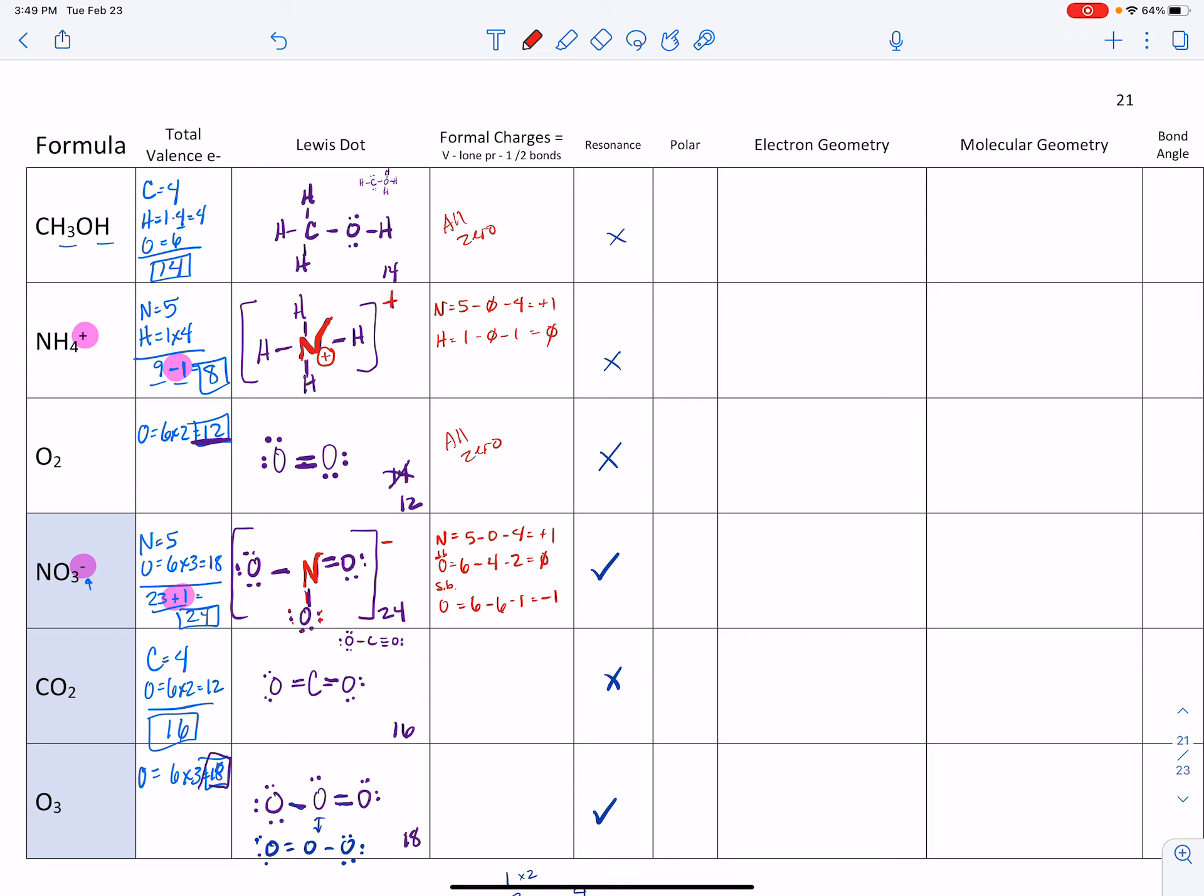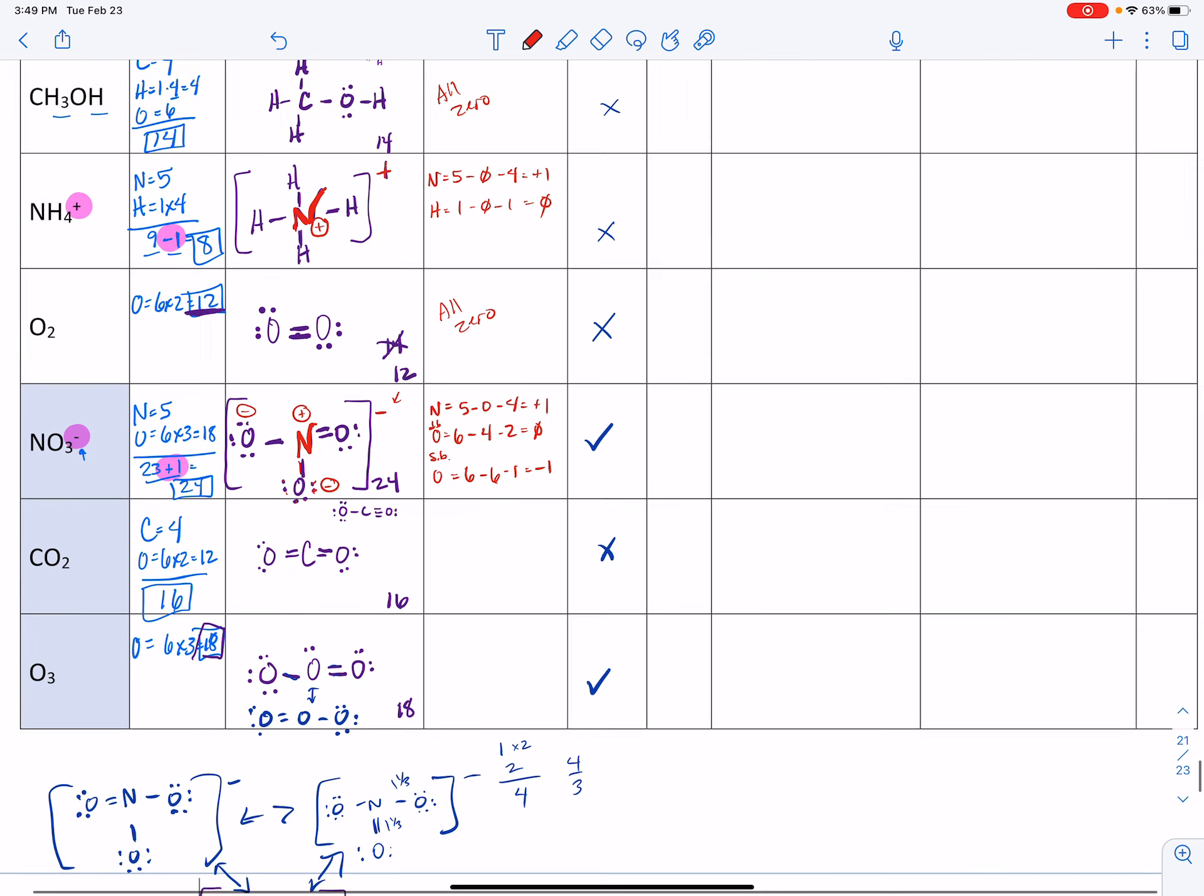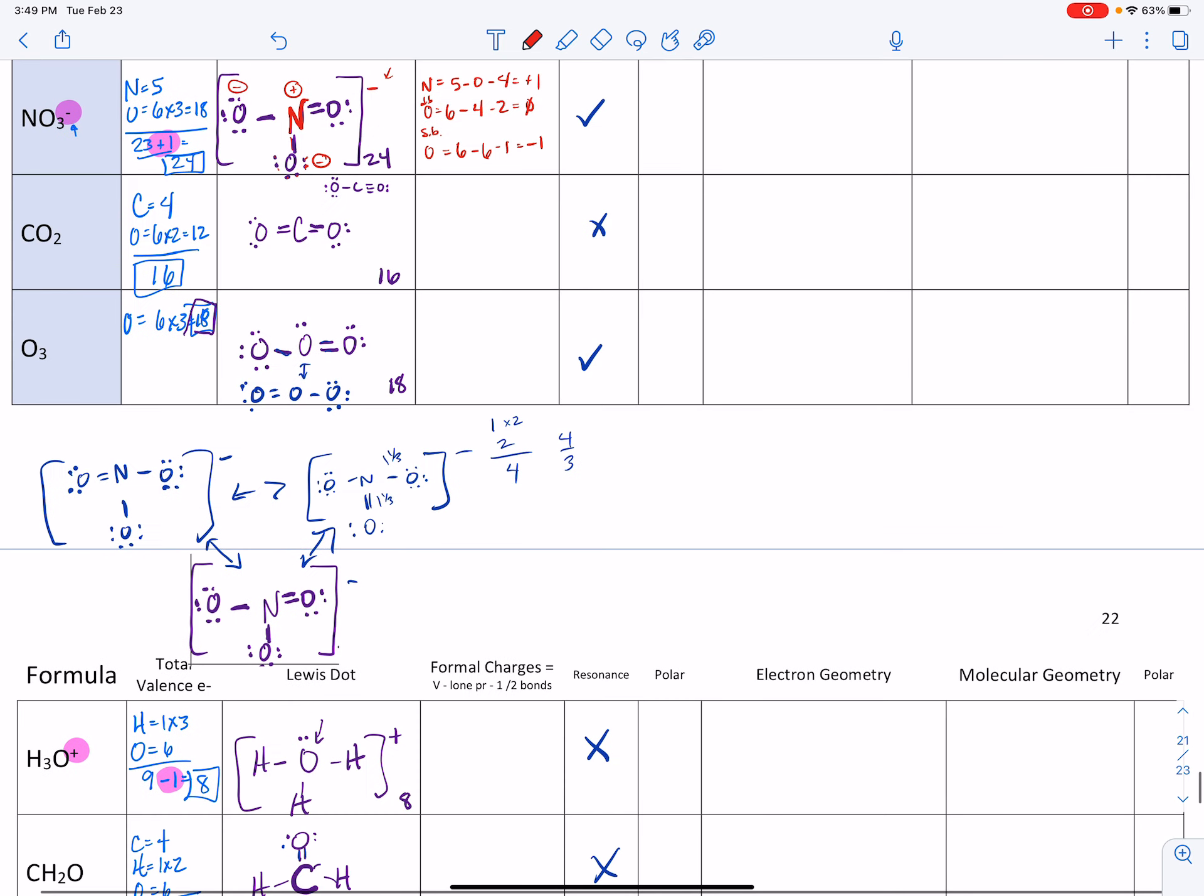They each have a negative charge. This is how you would represent this on the molecule: negative, negative, and positive. Notice that when you add that up, that does equal the total charge of the molecule, and this is zero over here.